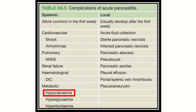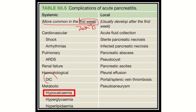It is important to note that systemic complications appear in the first week — that is, the first seven days — and after the first week, local complications develop. Systemic complications include: cardiovascular — shock or cardiac arrhythmia; pulmonary — acute respiratory distress syndrome; renal — renal failure; hematological — DIC (disseminated intravascular coagulation), which is the most fatal complication because without fresh frozen plasma, death is confirmed; and metabolic complications.